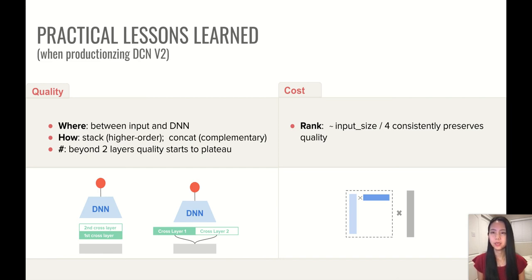Alright. And in the end, we would like to share some of our practical lessons learned when productionizing DCN V2. So for the quality side, there are questions we want to answer, for example, how to use, especially where to put the cross layer, how to organize it, and what's the number layers to use. And we summarize our observations here. So we found out that the closer to the input, the better the performance is. So we typically would insert cross layers in between the input and the DNN. And also either stacking different cross layers to create high order feature interactions or concatenating them to create complementary feature interactions all work pretty well in practice. And in terms of number of layers, we realize that when we go beyond two layers, there is still some quality gain, but the gain start to plateau a little bit for many of the models.